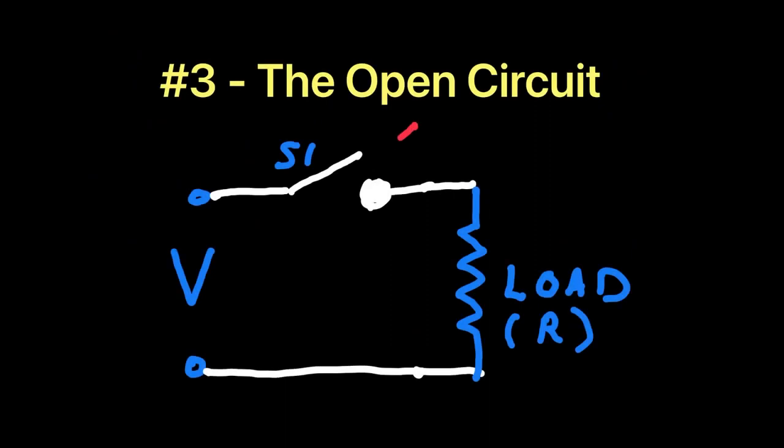The open circuit is just the closed circuit where the current flow has been interrupted by opening the switch. In this circuit, no current flows, and no voltage appears across the load. The voltage source actually appears across the open switch because the load resistor serves as a conductive path through which that voltage can appear.